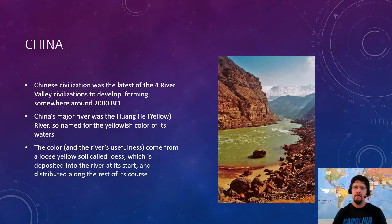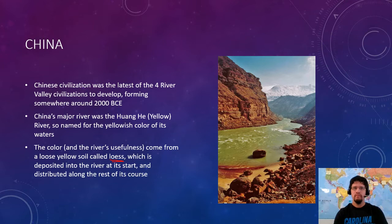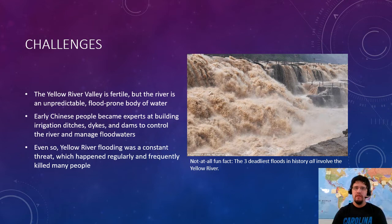Now let's transition to our last cradle of civilization: China. China is the last of the four River Valley civilizations to develop, forming up somewhere around 2000 BCE — it makes sense, as they're the furthest from humanity's origin point. China's big river is the Wanghe River, also known as the Yellow River, named for its yellowish tint from a yellowy soil called loess. That loess, deposited at the head of the river, actually makes it extremely fertile — and you need a fertile river valley to establish a civilization, just like Egypt, Mesopotamia, and the Indus Valley.